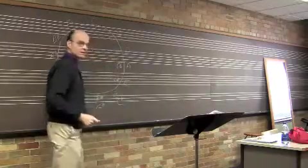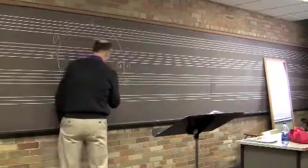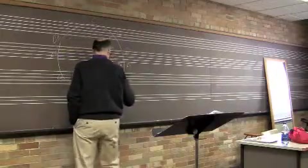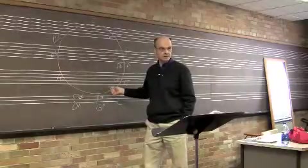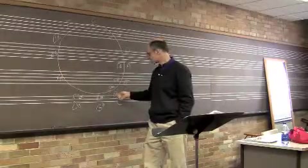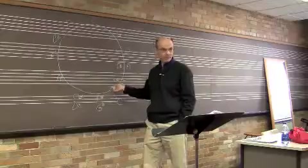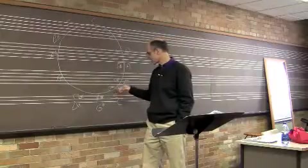Relative minor of B? G sharp. So what's the key signature of G sharp? Five sharps. It's the same as the key of B major, isn't it? They both have five sharps, but one is minor and one is major.